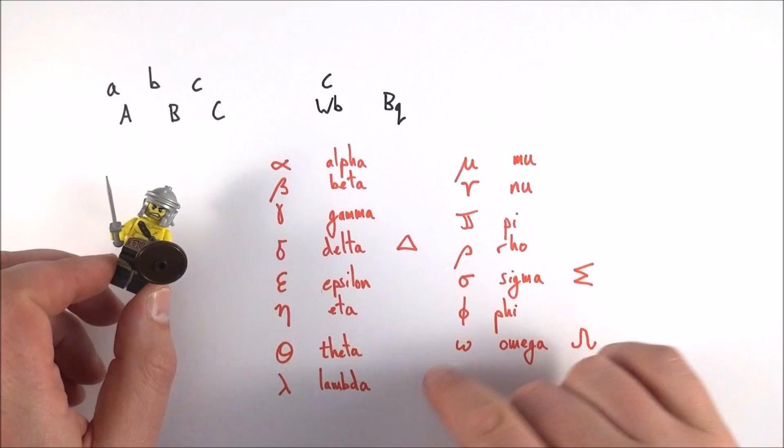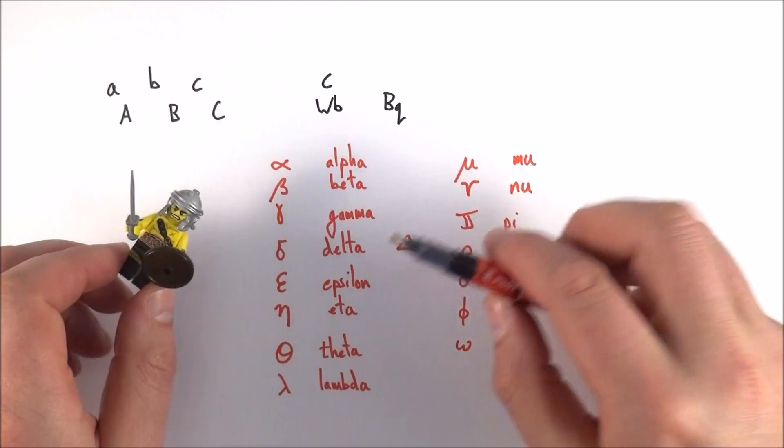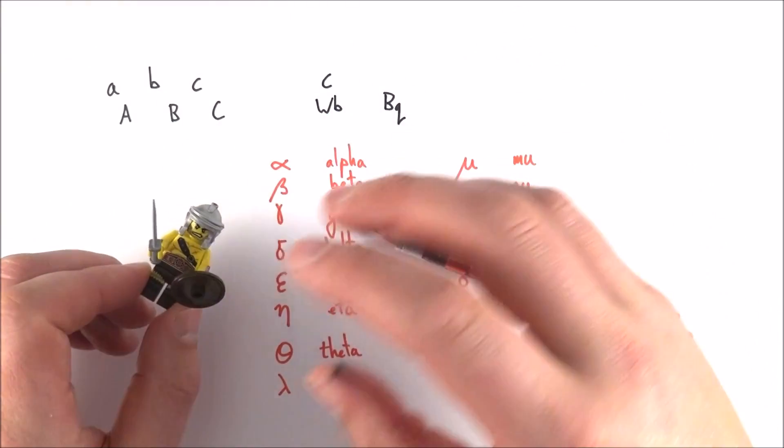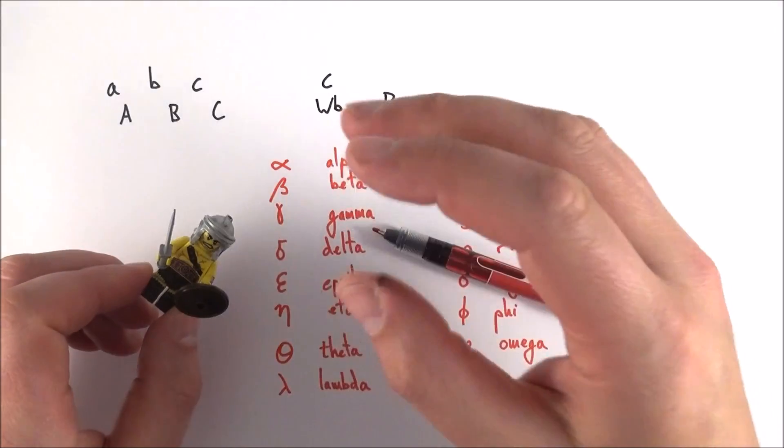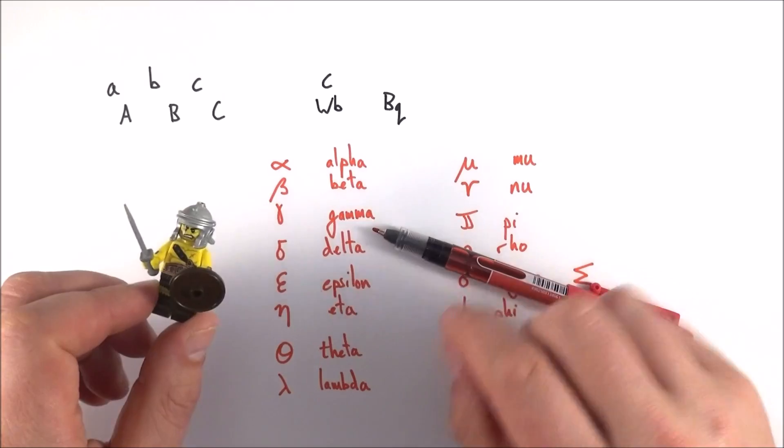If you have a good understanding of these letters here—how to say them and also how to write them down—then that really expands the amount of things that you can describe using letters so that you don't have to write as much. So when you're looking at new units, new equations, and new quantities, these are the things that you need to know about as you go through A-level physics.